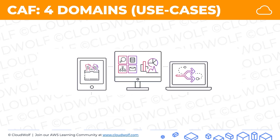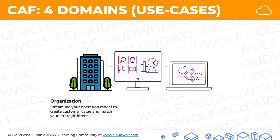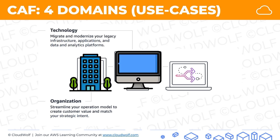Now for the domains or use cases, there's an image in the AWS infographic we'll look at shortly. The first domain is organization: streamline your operating model to create customer value and match your strategic intent. The second is technology: migrate and modernize your legacy infrastructure, applications, and data and analytics platforms.